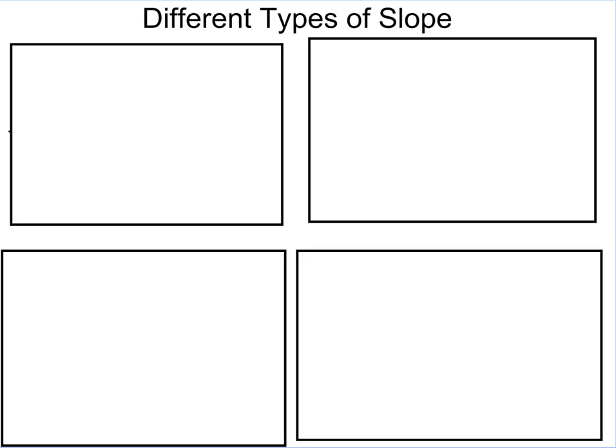Now that we've looked at finding a slope looking at a graph and looking at finding two points, which are the two most common ways that you're going to find a slope, let's look at some of the different types of slope that you're going to see.